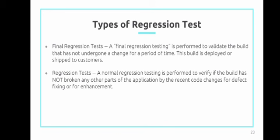Next is normal regression testing. A normal regression testing is performed to verify if the build is not broken in other parts of the application by the recent code change for the defect fixing or enhancement. Ito regular lang na ginagawa para malaman kung may mga nagbabago ba — bine-verify lang nila kung yung system o may parte ng application ay sira o hindi nagana, o mayroong ibang parte ng code na nag-error. Ito ay para malaman lamang at maayos agad. At yun lang po ang aking report. Maraming salamat.